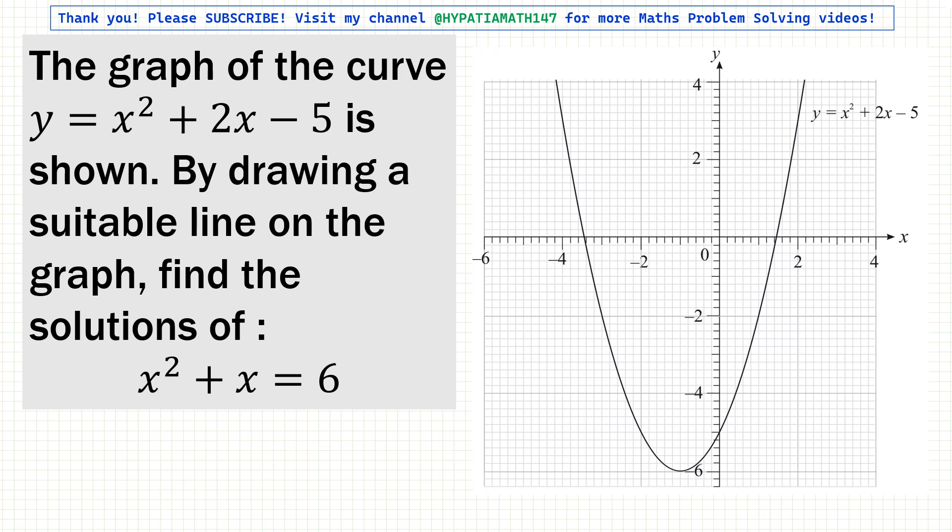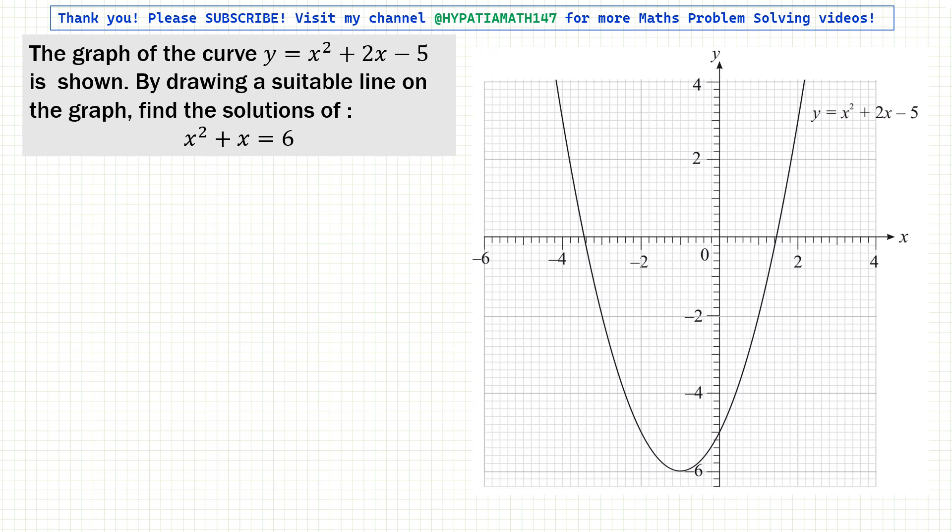Obviously we have to draw a line and we need to find the equation of this line. So what we start with is the curve equation they have given us: y equals x squared plus 2x minus 5. This can be written as y plus 5 minus x equals x squared plus x.